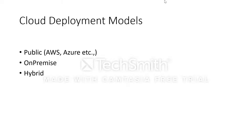Cloud deployment models. We have public cloud, like AWS, Azure, and Oracle Cloud. We also have on-premises. And we have hybrid, which is a combination of public and on-premises.